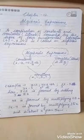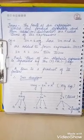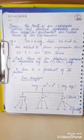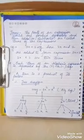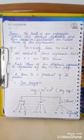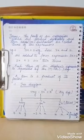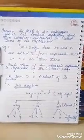The next word is 'terms.' The parts of an algebraic expression which are formed separately and then added or subtracted are called terms of the expression. For example, in 3x + 2, here 3x and 2 are added to form the expression, so 3x and 2 are two terms. Each term of an algebraic expression is separated by the plus or minus sign.